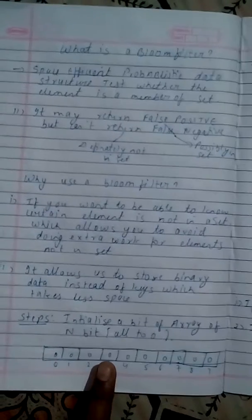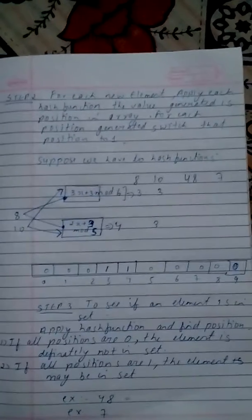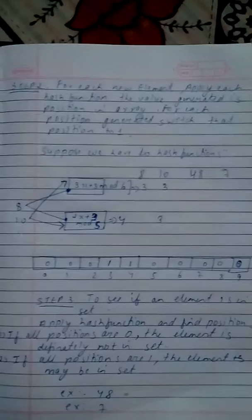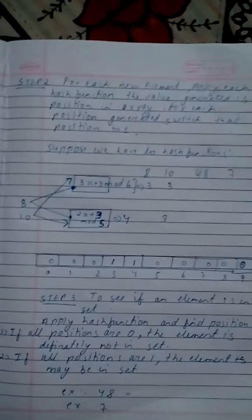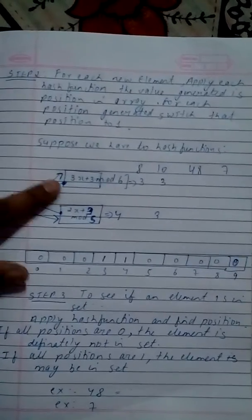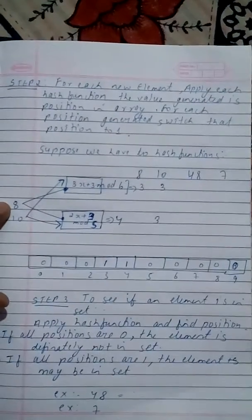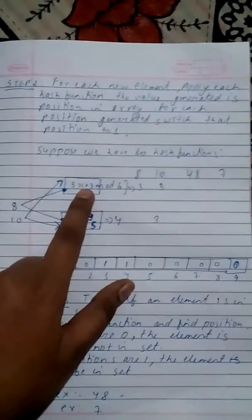Next step is the elements. After initializing all the bits to 0, you have to check with the hash functions. We have to take two hash functions, one is FNV and other is Murmur. Here I have taken for the example two hash functions: 3x plus 3 mod 6, and second one is 2x plus 3 mod 5. I have taken two examples, suppose 8 and 10.